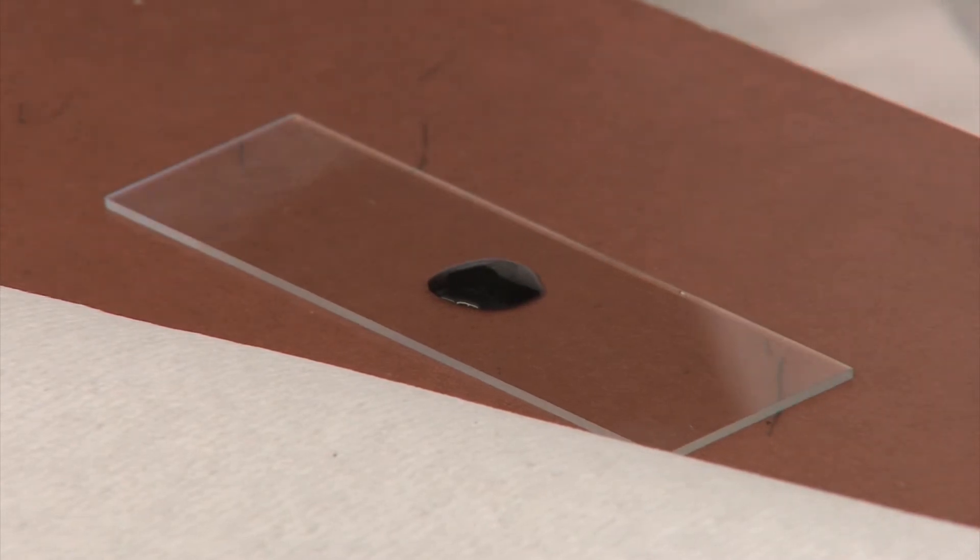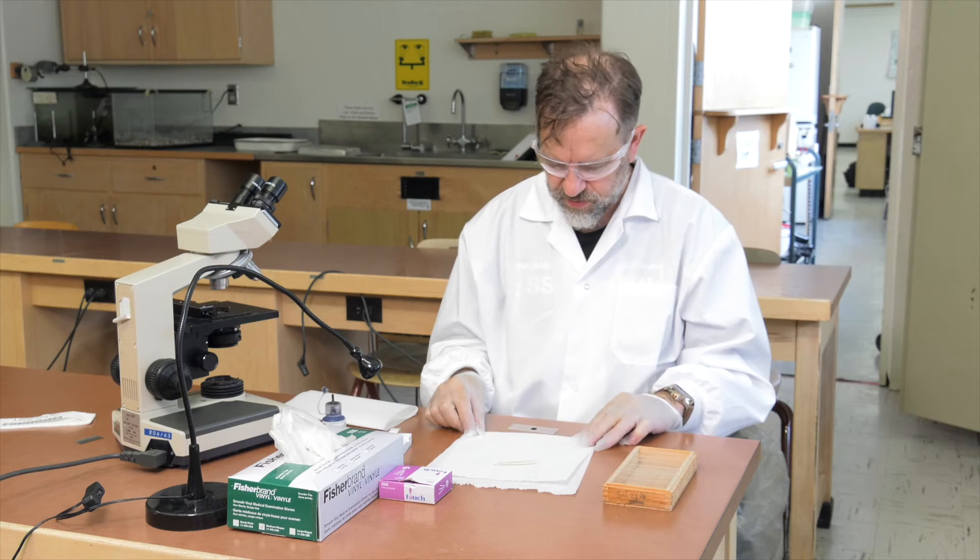Methylene blue is used in this preparation because it stains DNA dark blue, like the DNA in the cells of your hand. If you do get the stain on your hand, you may be looking blue for a while, so handle the stain carefully or use gloves.